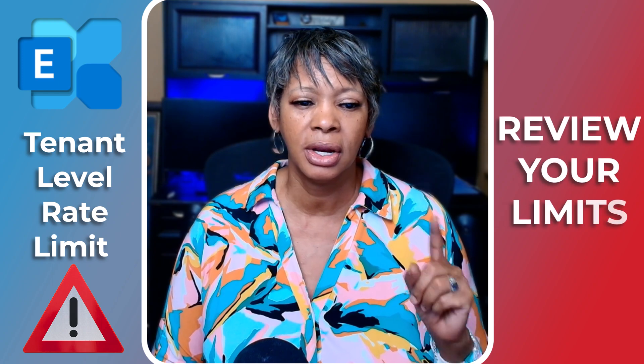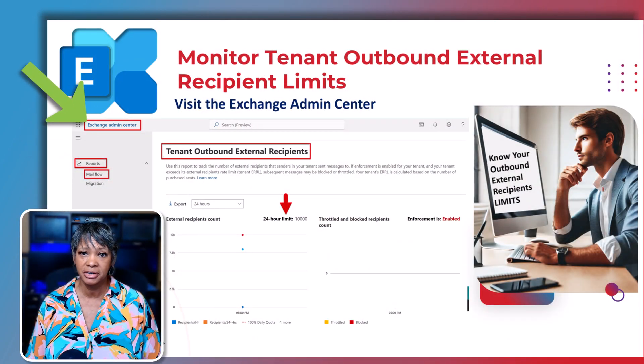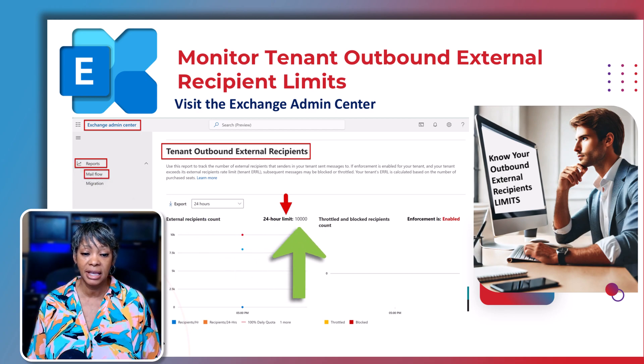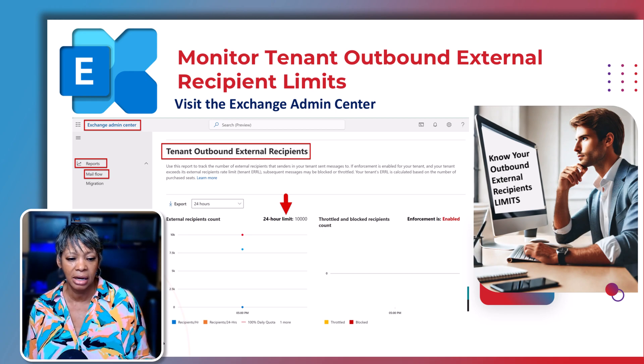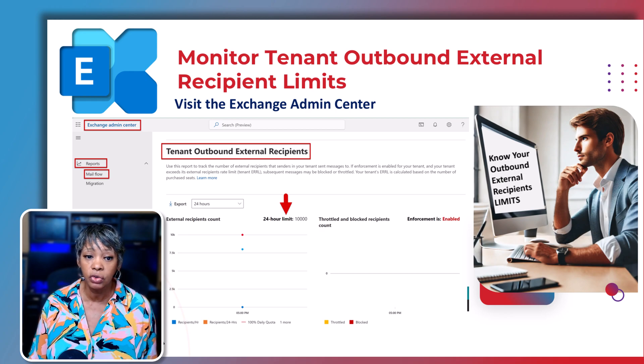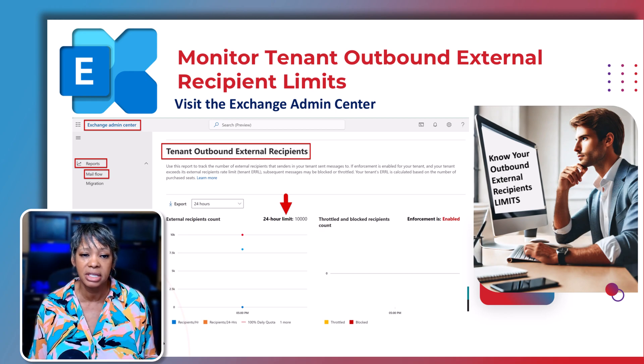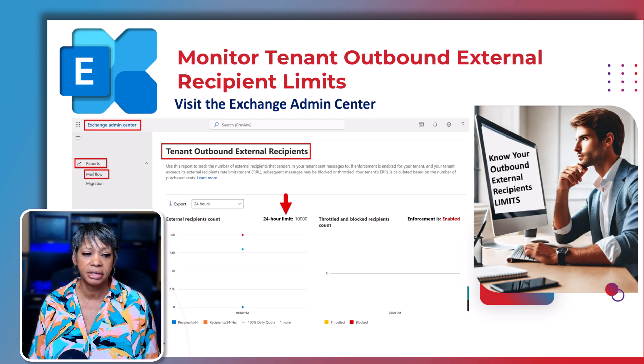One important thing to be aware of: you will not receive any type of alert when you are approaching your capacity. Whether you are an IT Exchange administrator or a small business owner with access to the Exchange Admin Center, review your limits regularly. Go to the Exchange Admin Center, click on Reports, then Mail Flow, and you can see your 24-hour limit. In this example it shows 10,000. It will display your activity, and there are additional reports on that page as well. Make sure you keep track of your external recipient rate limit.